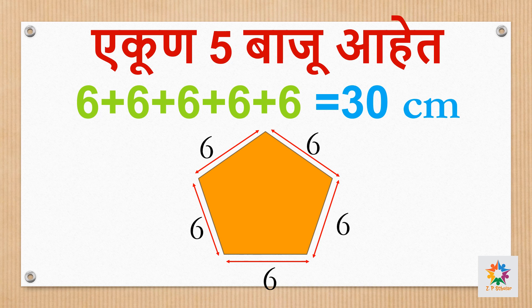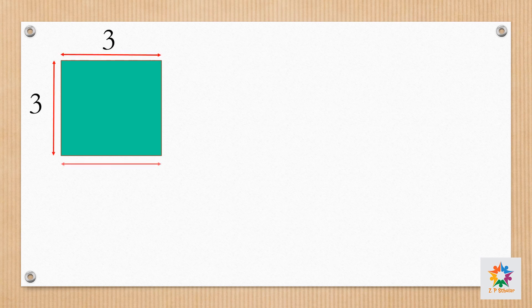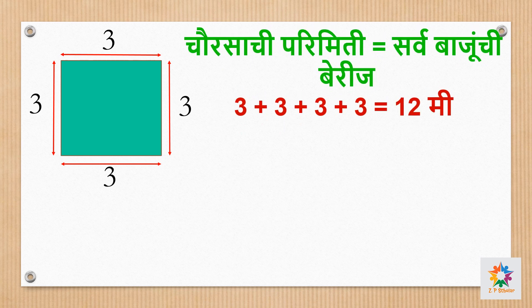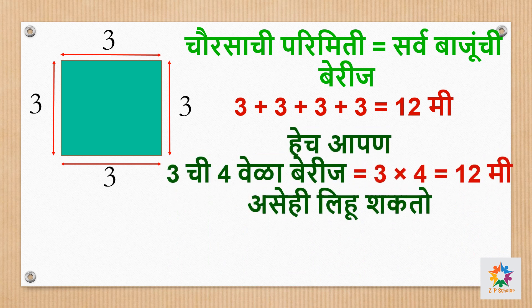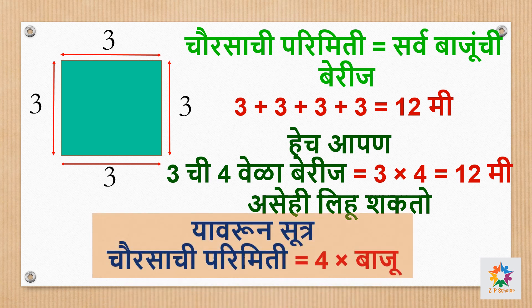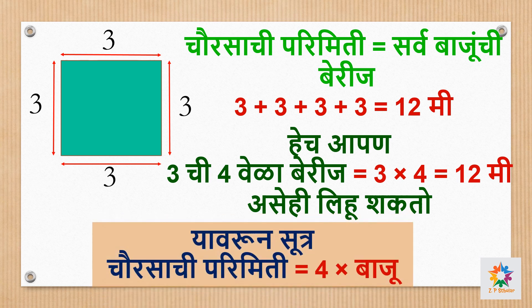बरोबर 30 cm - या आकृतीची परिमिती किती? बालमित्रांनो कोणत्या आकृतीची परिमिती काढायची म्हणजे तिच्या बाजू बेरीज करायच्या. परिमिती काढताना सूत्र - आपण 3 च्या 4 वेळा बेरीज म्हणजे 3 गुणिले 4 आहे. 3 गुणिले 4 बरोबर 12 मीटर ही परिमिती आली. त्यावरून आपल्याला सूत्र काय मळाले? चौरसाची परिमिती बरोबर चार गुणिले बाजू.